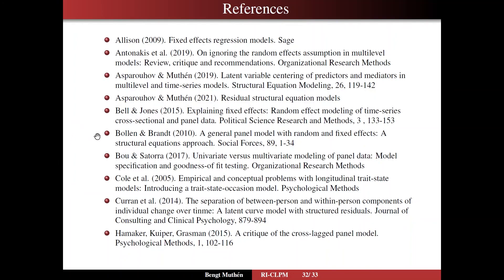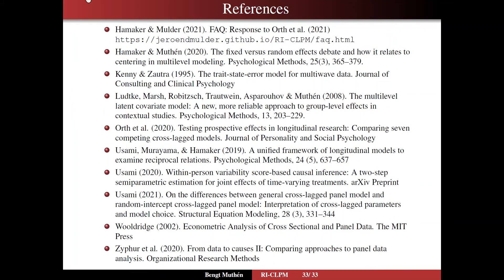For instance, Bolan and Brandtis is a nice one. There is a FAQ on Hamaker-Mulder's website — a beginning of a response to the Oort article criticizing the use of the CLPM. And we have Usami, who, towards the end of the 2021 article, has some reasoning about causal inference. With that, I'll end Web Talk 4, Part 1 for Continuous Variables.